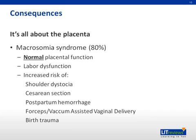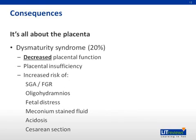80% of babies born after a prolonged pregnancy will have adequate placental function, making them macrosomic. The main risk in this group is labor dysfunction, which increases the occurrence of shoulder dystocia and its complications: cesarean section, postpartum hemorrhage, operative vaginal deliveries such as forceps-assisted and vacuum-assisted vaginal delivery, and birth trauma in general. The remaining 20% of babies will have inadequate placental function, leading to dysmaturity syndrome. These neonates are at higher risk of being small for gestational age, having fetal growth restriction, oligohydramnios, fetal distress, meconium-stained fluid, acidosis, and requiring cesarean section.